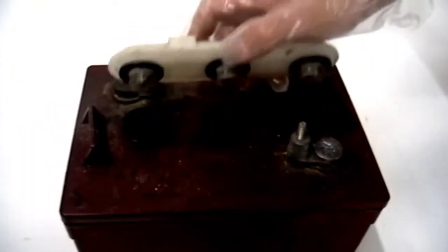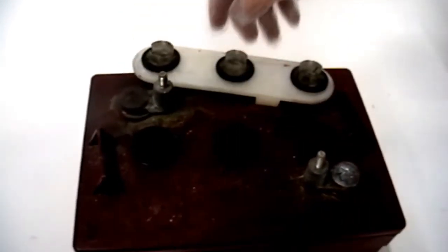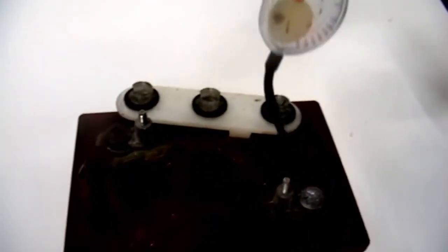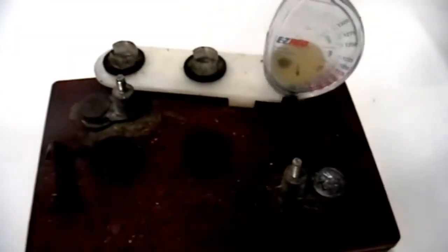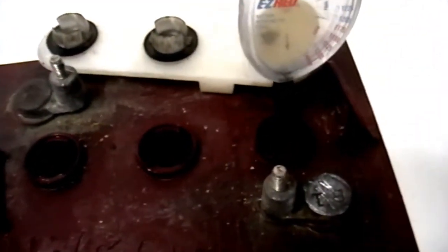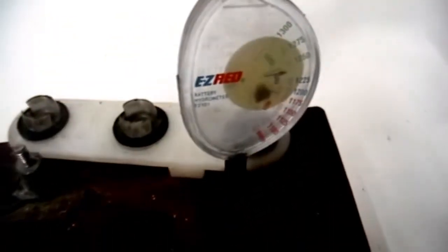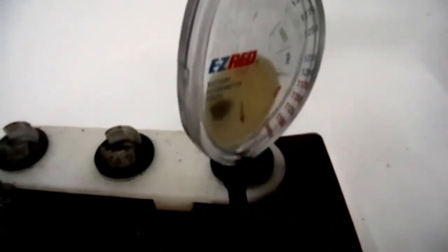To use a hydrometer, carefully remove the battery caps. Insert the tube of the hydrometer into a battery cell. Compress the pump to fill the chamber with solution. It is best to do this at least twice for each cell to make sure you get an accurate reading.